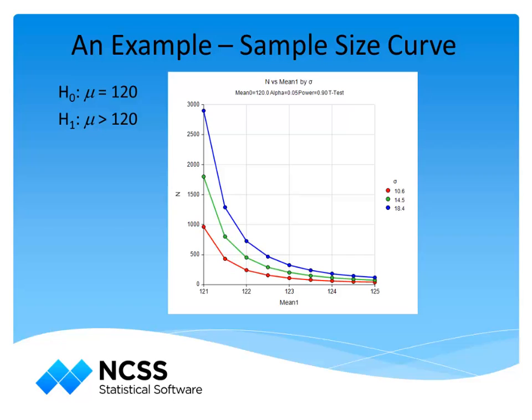We can examine how a range of values for each affects the required sample size using sample size curves. The sample size curves display the required sample size to achieve 90% power at alpha equal to 0.05 for various population means. The three curves correspond to three values for the population standard deviation — one each for the lower and upper limits of the confidence interval, and one for the middle. It is apparent from this plot that as the true mean is farther from 120, the sample size required to achieve 90% power decreases quickly, especially between 121 and 123. A larger standard deviation also requires a larger sample size.